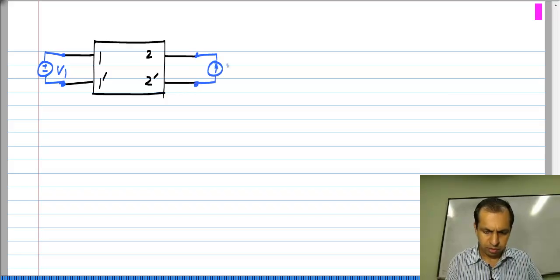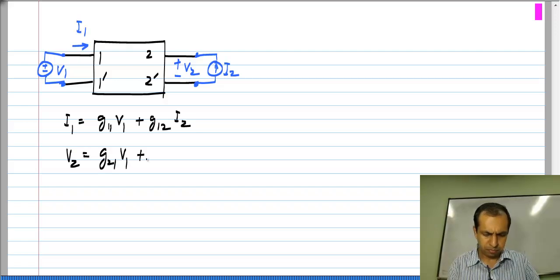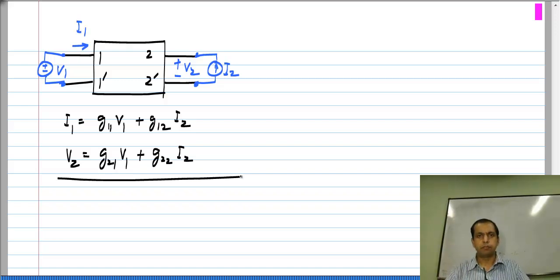We apply V1 and I2 and measure I1 and V2. As you expect, both I1 and V2 are linear combinations of the applied independent sources which are V1 and I2. Now, to measure this again we will do four measurements with an independent source set to 0 each time.